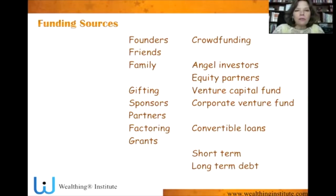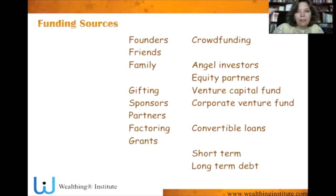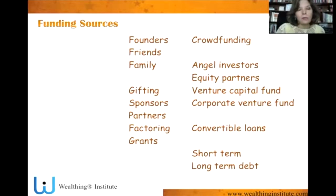You have funding sources as founders, family and friends — those are the three F's. You have non-funding mechanisms: gifting, sponsors, partners, factoring, grants. You also have crowdfunding, angel investors, equity partners, venture capital funds, and corporate venture funds — more formal ways of investing in exchange for equity. You also have short-term and long-term debt and a hybrid called convertible loans, which is just a way of structuring a deal between debt and equity.